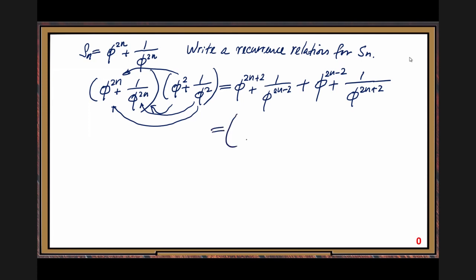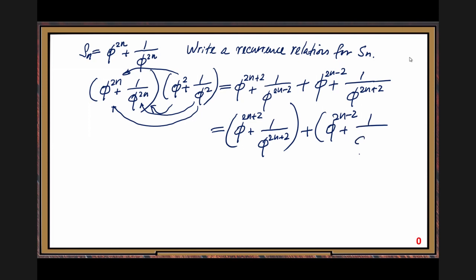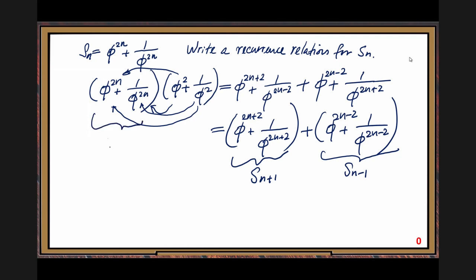So phi to the 2n+2 plus 1 over phi to the 2n+2 — that's the first parenthesis. Second: phi to the 2n minus 2 plus 1 over phi to the 2n minus 2. Based on our definition, this is S(m+1), this is S(m-1), here is S(m), and here is S2.